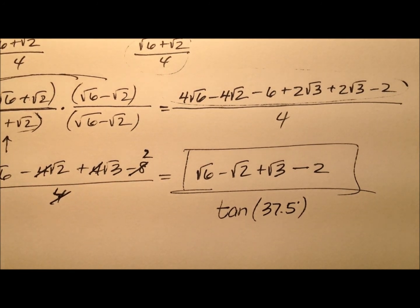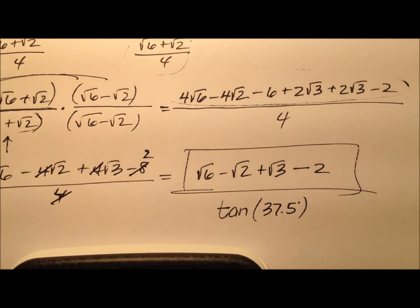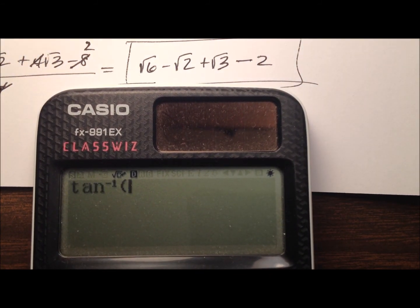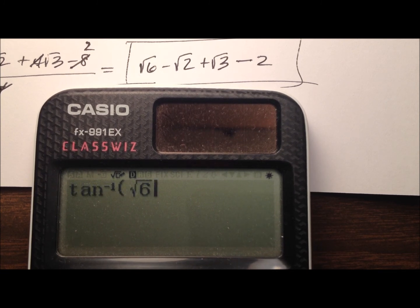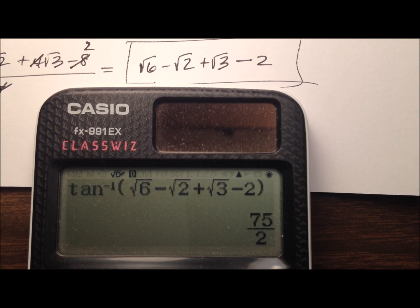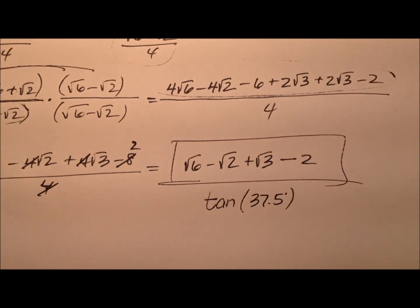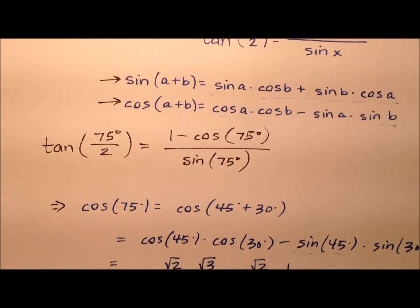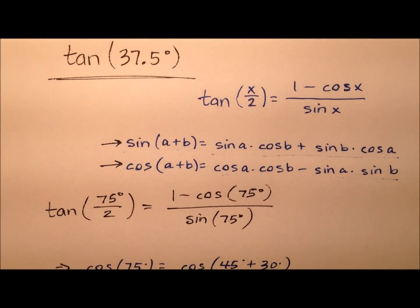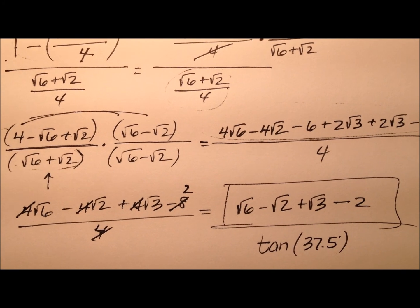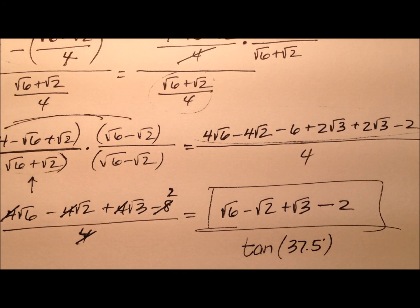Let's grab a calculator to ensure this is correct. Using the inverse tangent of our expression — square root of 6 minus square root of 2 plus square root of 3 minus 2 — we confirm it gives 37.5 degrees, which is 75 divided by 2. So this does indeed work. We used a half-angle identity for tangent along with a couple of supporting values, and the exact value of the tangent of 37.5 degrees is the square root of 6 minus the square root of 2 plus the square root of 3 minus 2.